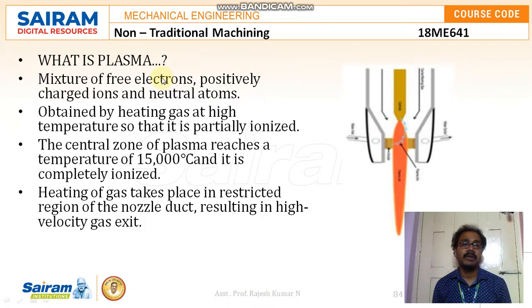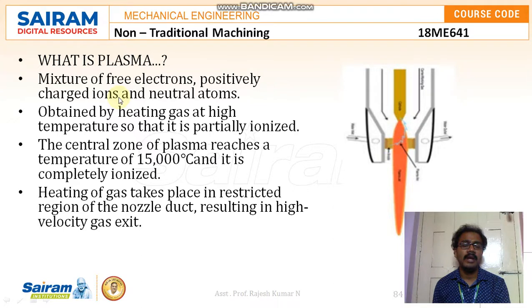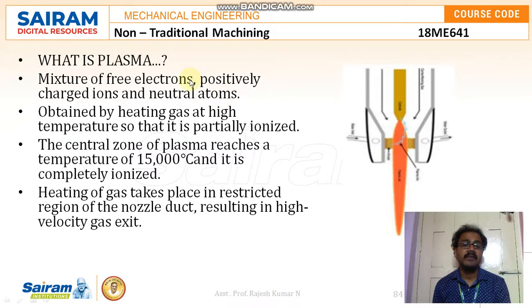Positively charged ions can be obtained by supplying a heavy light source over any atom. Similarly, free electrons can be obtained from the valence bond of anything, and neutral atoms can be obtained by removing the excess positive and negatively charged ones. A mixture of all these things gives us plasma, obtained as a heated gas at high temperature that is partially ionized.